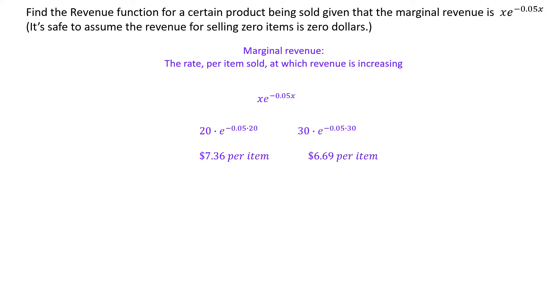That means that once we've reached the sales level of 30, our revenue is changing at a rate of $6.69 per item. Again, you can think of that as the sales cost of perhaps the 31st item, just to give you a sense of what that means. But in the calculus class, you can often do the problems without even knowing what marginal revenue means, as long as you know that marginal revenue is the derivative of revenue.